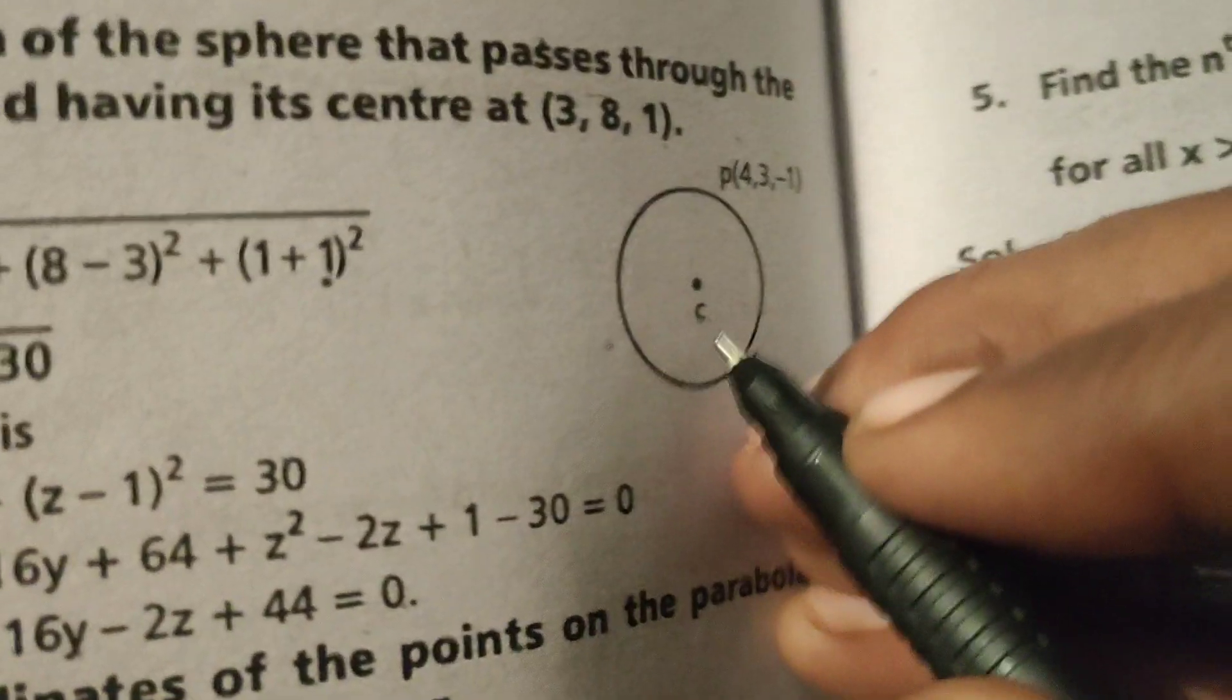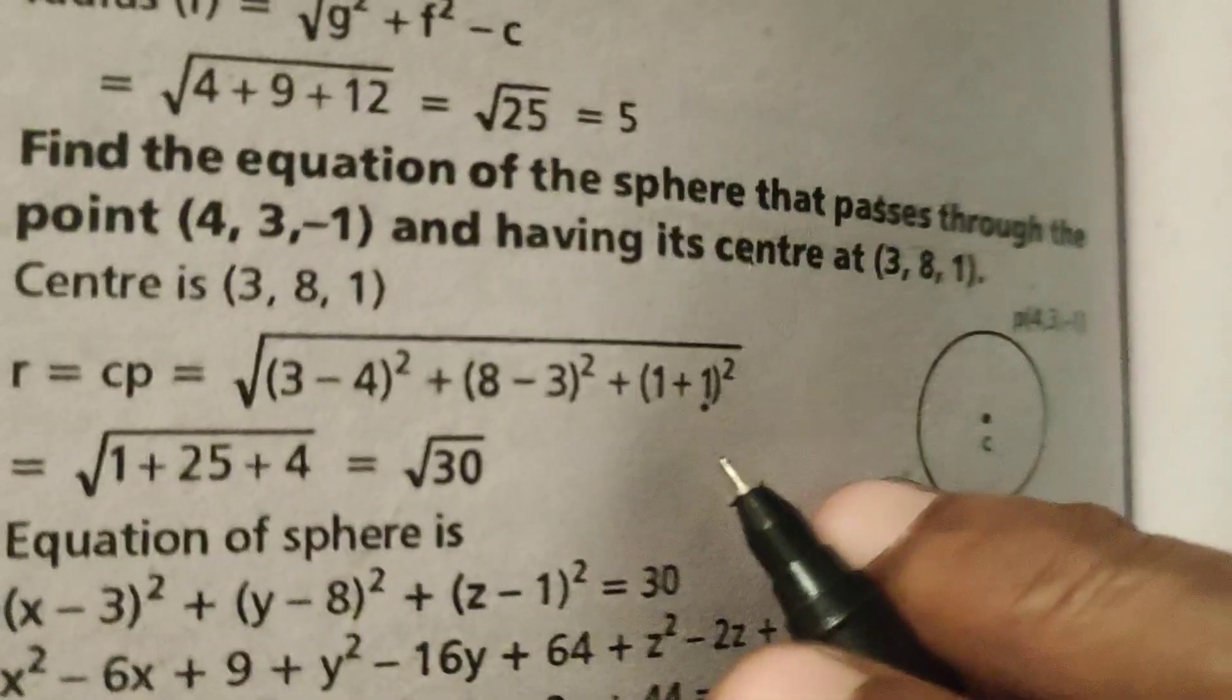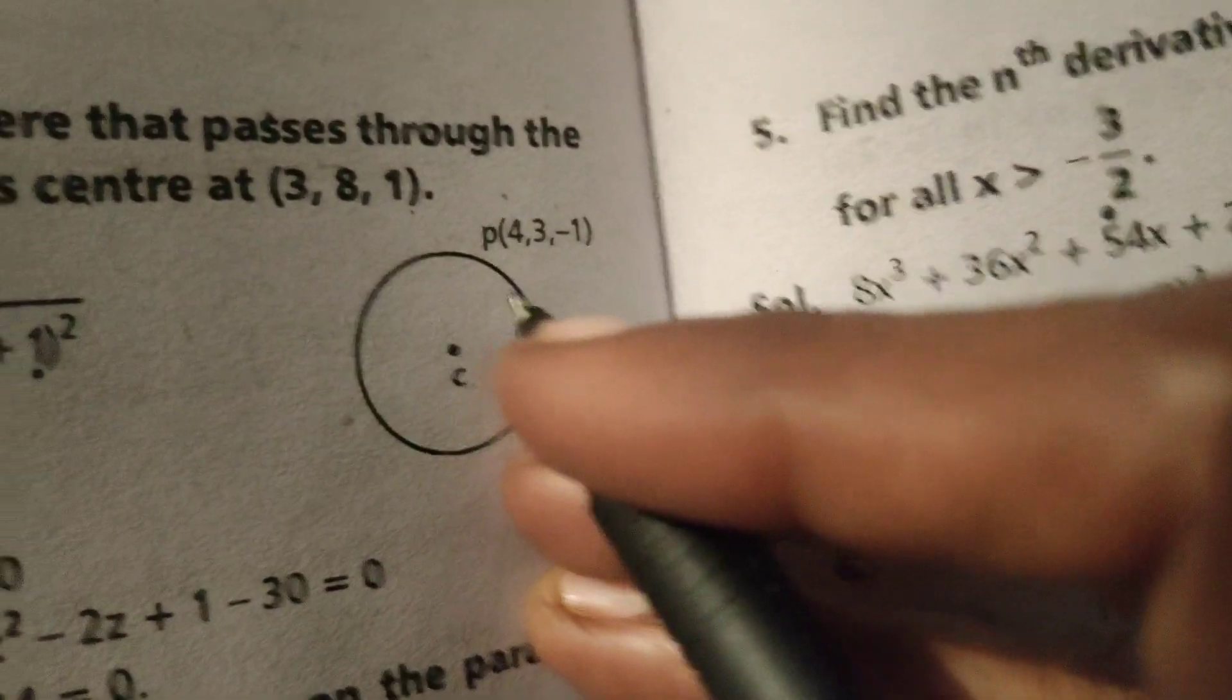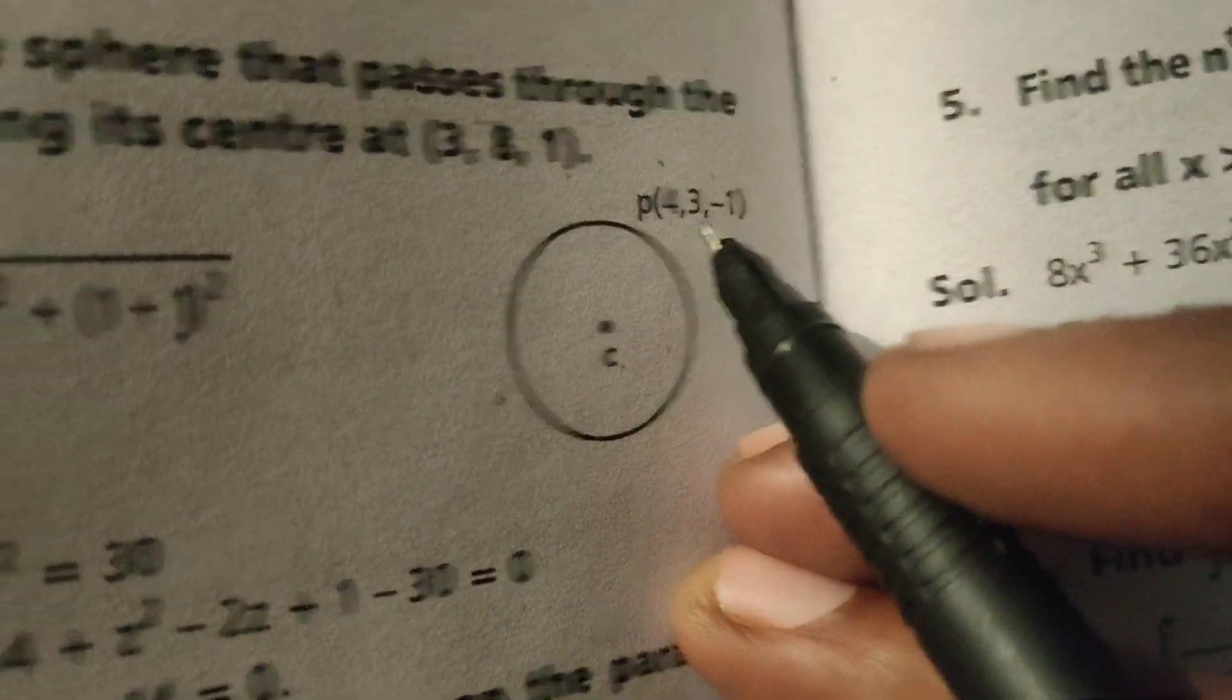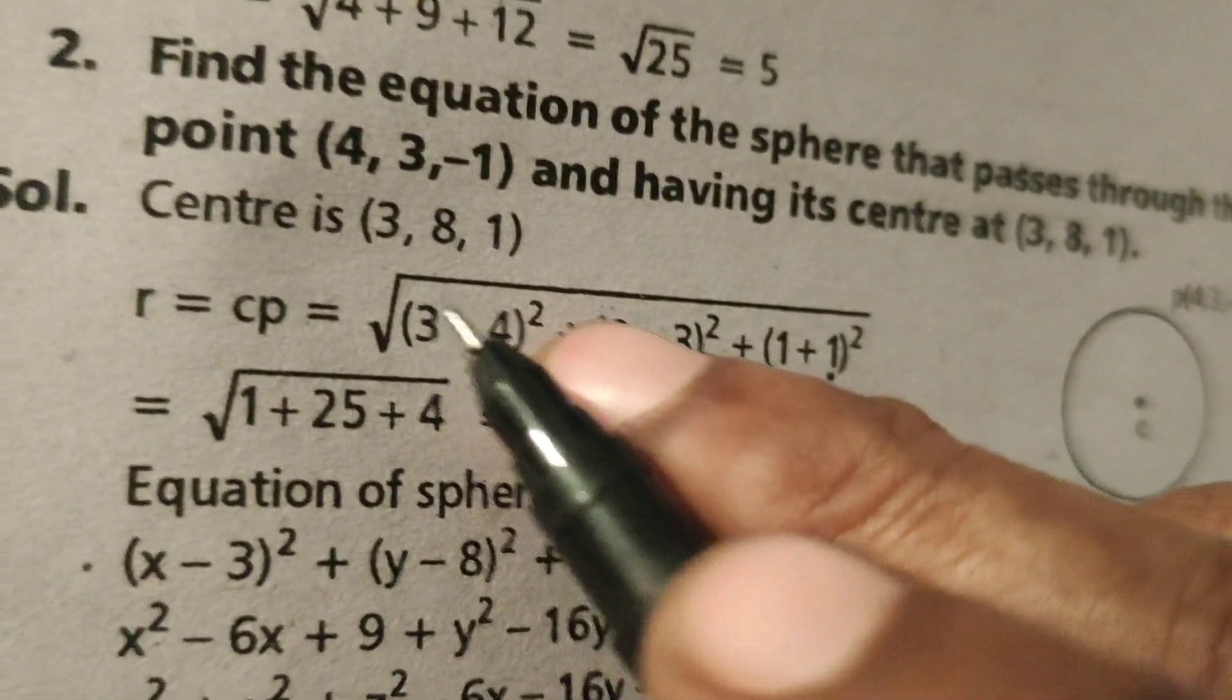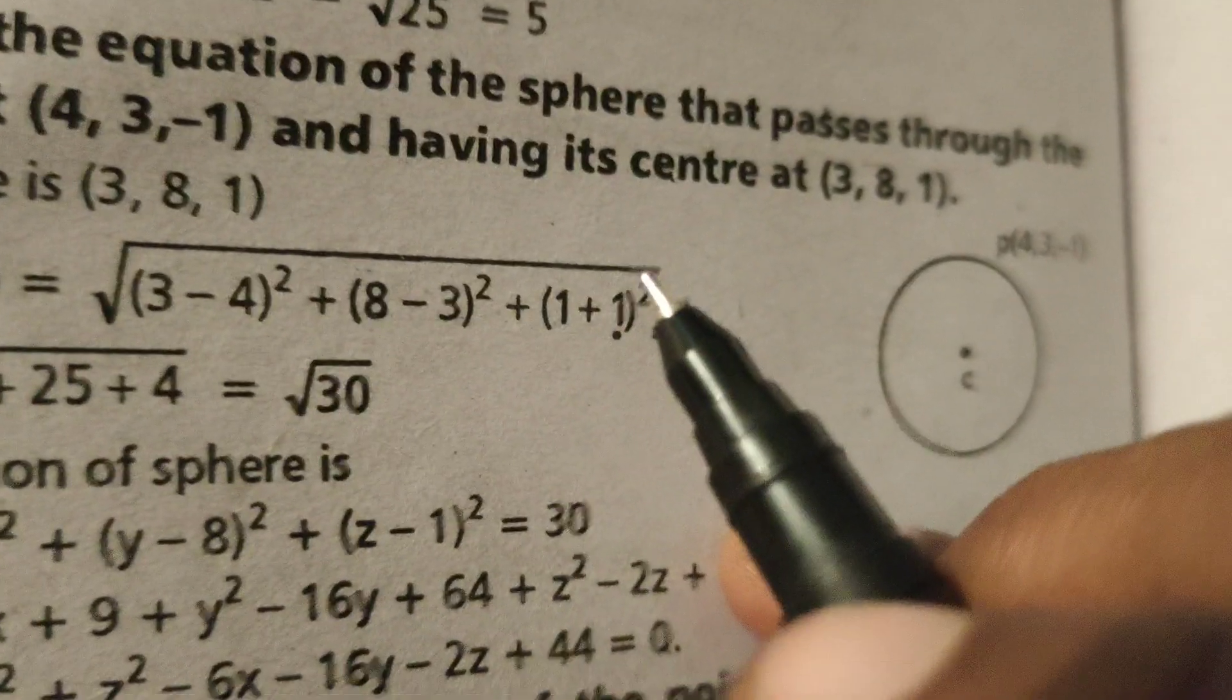This is the circle. Here C is the center and P is the point (4, 3, -1). The given center is (3, 8, 1).